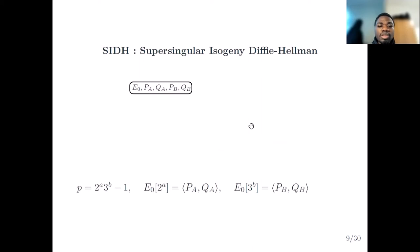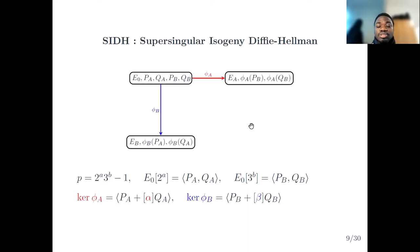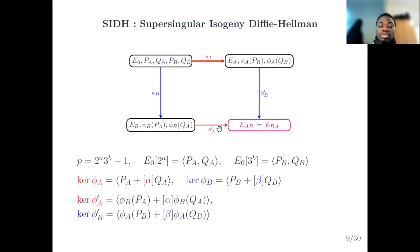Starting from E0 and the respective torsion group bases, Alice computes her secret isogeny and evaluates it on Bob's torsion group basis. Bob does the same. The public keys are the curves and the respective torsion point images. With these torsion point images, they can make the diagram commute and obtain the same shared curve, whose j-invariant is used as the shared secret. Since SIDH is a Diffie-Hellman type key exchange, we have the key recovery problem, the computational Diffie-Hellman problem, the DDH problems, and so forth.